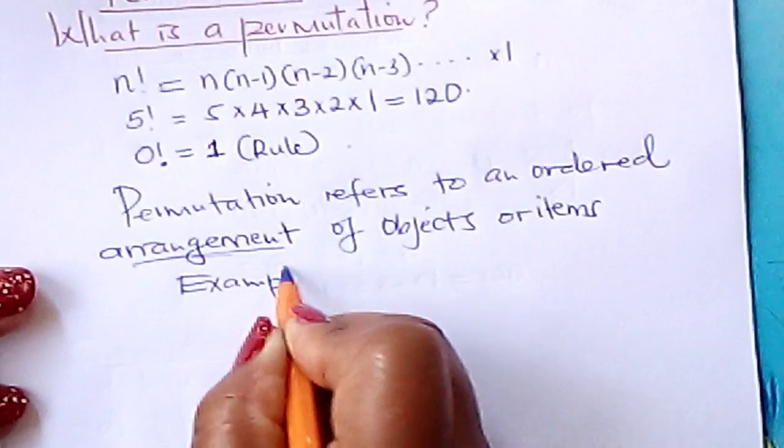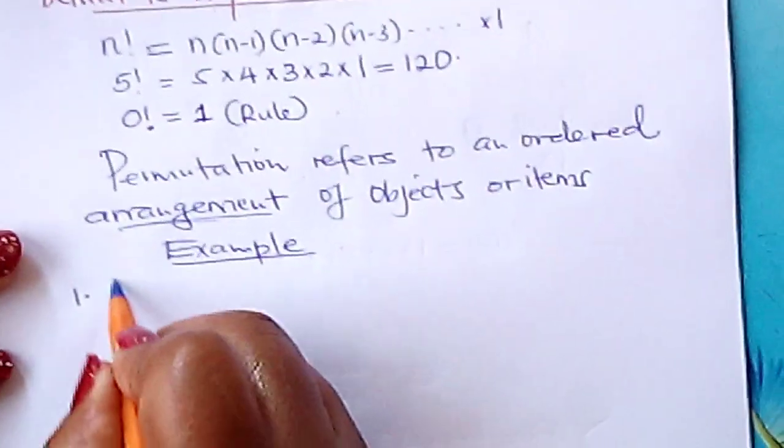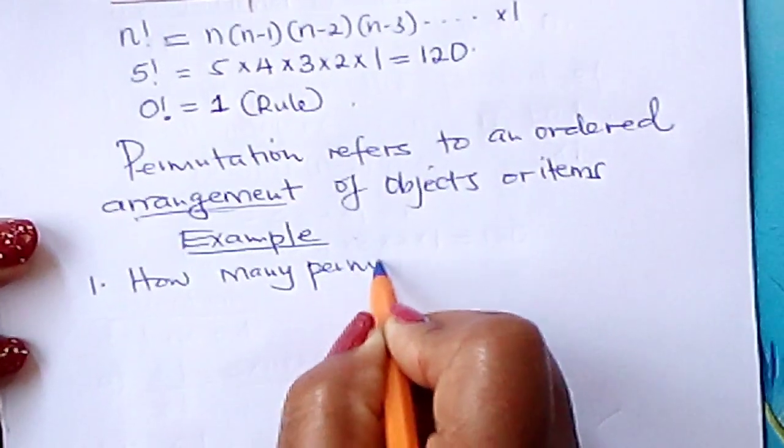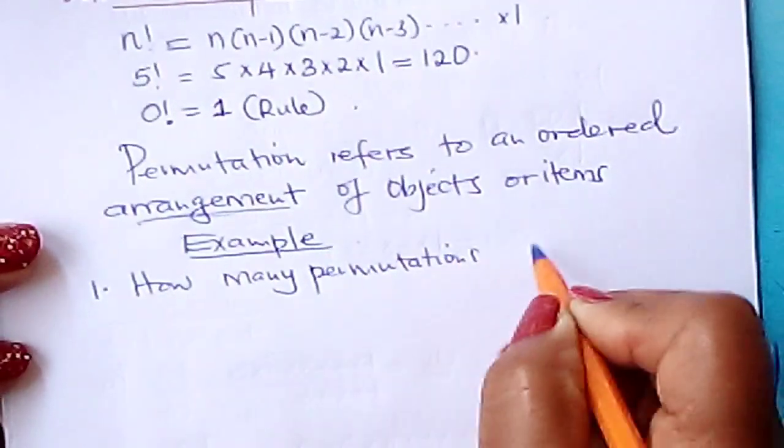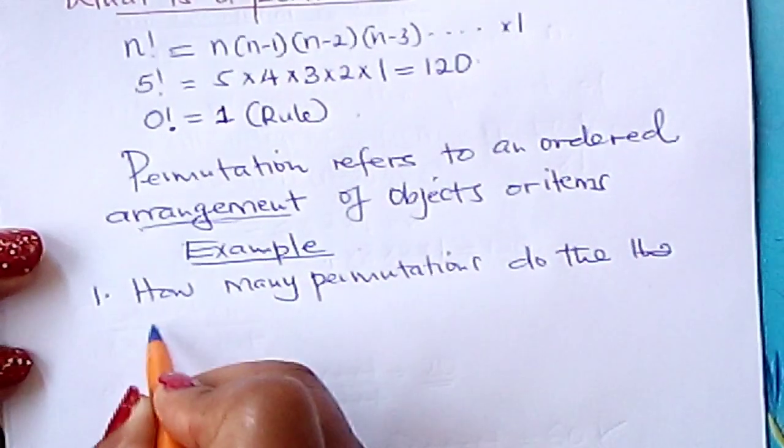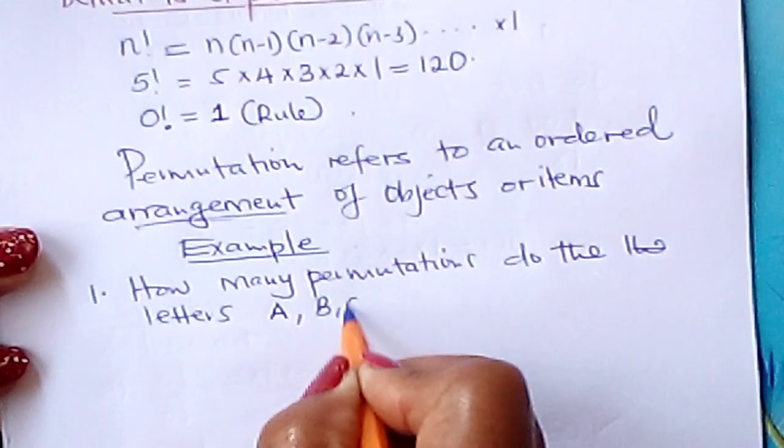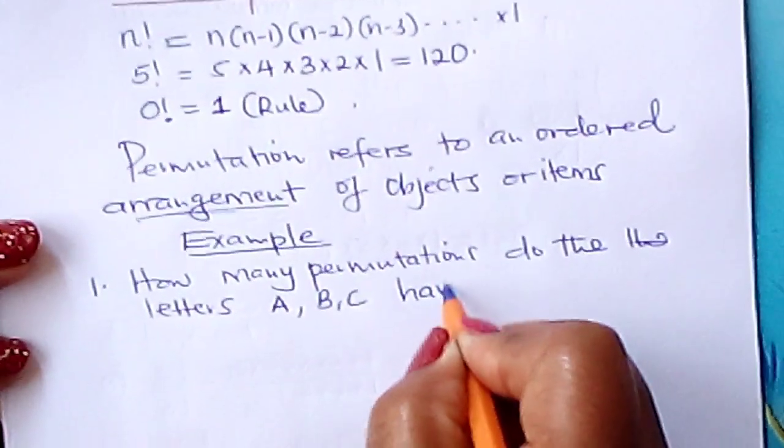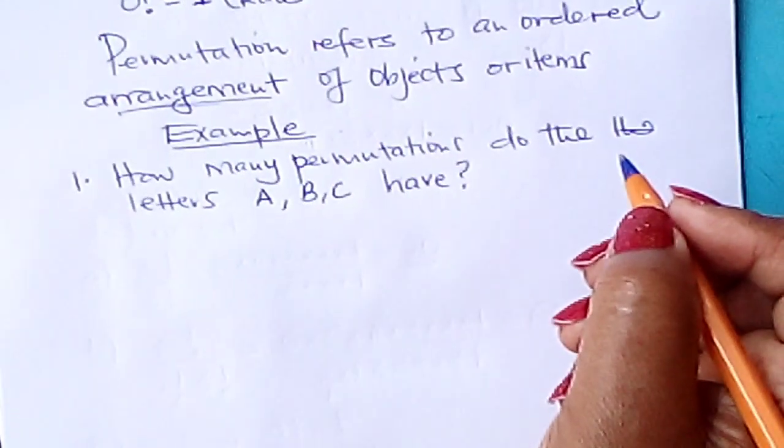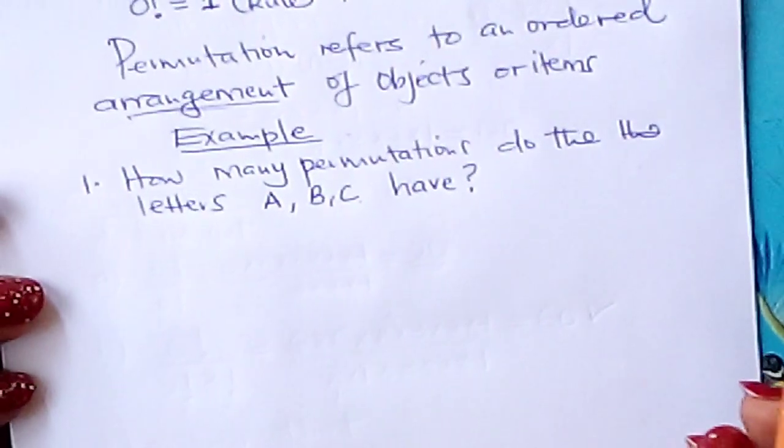Suppose we do an example here. Suppose you are asked, how many permutations do the letters A, B, C have when arranged in a row? How many arrangements would you make with these three different letters?